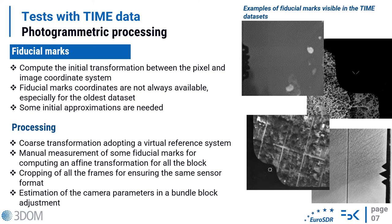About the photogrammetric processing, a first bottleneck is related to the lack of fiducial mark coordinates needed for computing the initial transformation between the pixel and the image coordinate systems. This is especially true for the oldest data sets, so some initial approximations are needed. We started with different blocks using a coarse transformation adopting a virtual reference system, manually measured some fiducial mark coordinates for computing the affine transformation, cropped all the frames to ensure the same sensor format, and finally estimated the camera parameters in a standard bundle block adjustment.